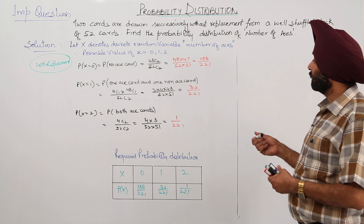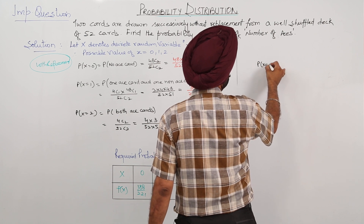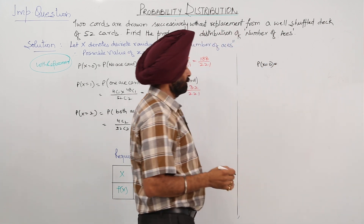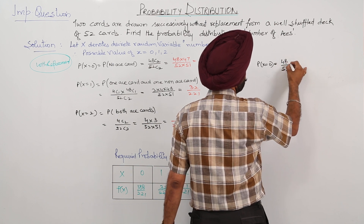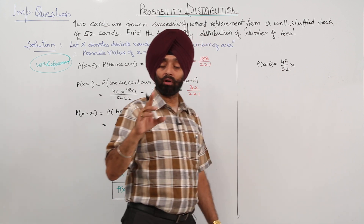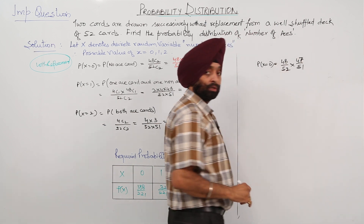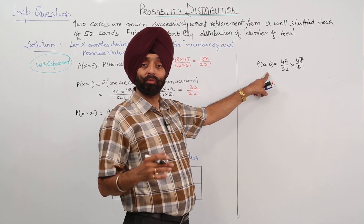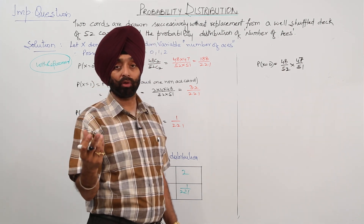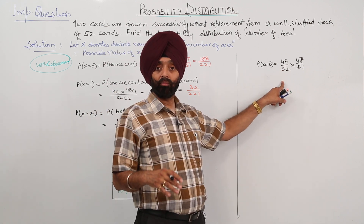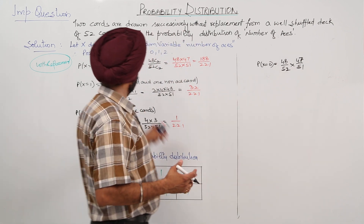There is an alternative method. For P(X = 0): the probability the first card is not an ace is 48/52, and since the card is not replaced, the second card not being an ace is 47/51. However, writing the 'not ace' notation can cause confusion, which is why the direct combination method is preferred.